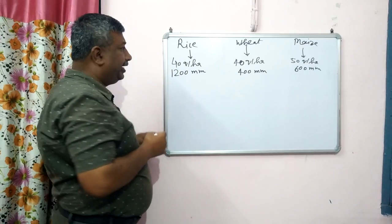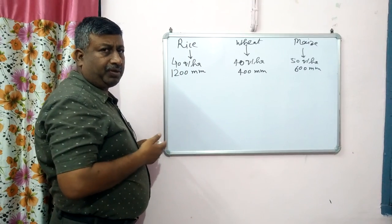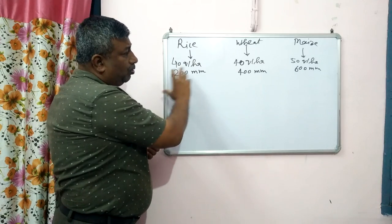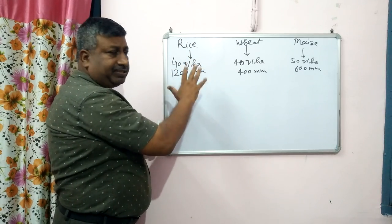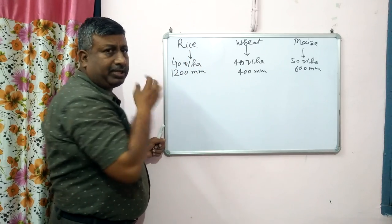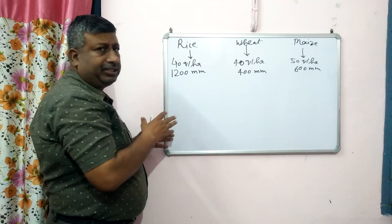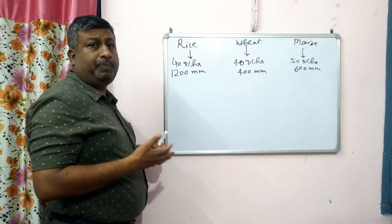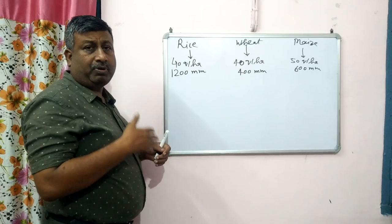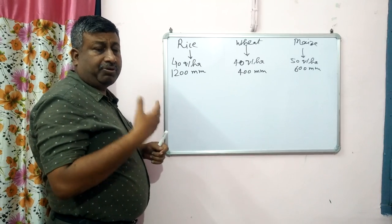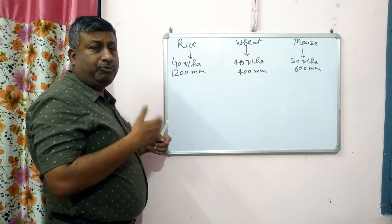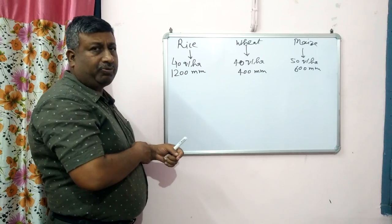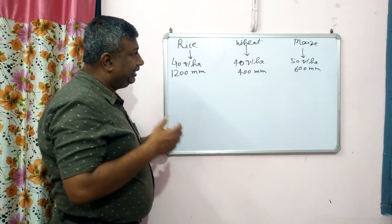So if we know these two data points, we can calculate how many liters of water are required. In the case of rice, a huge quantity of water is required, particularly for transplanted rice — for puddling, for transplanting, and to maintain water throughout the entire rice growing period. In the case of wheat, a much lower water requirement is needed.